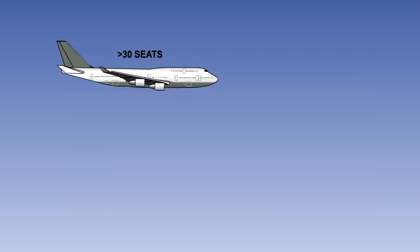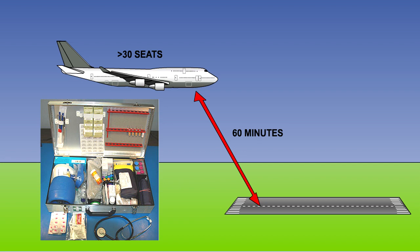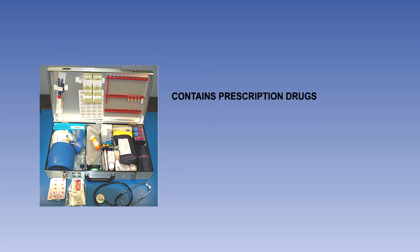If an aeroplane with a maximum approved seating capacity of more than 30 seats is operated more than 60 minutes flying time from an aerodrome at which qualified medical assistance can be expected to be available, it must be equipped with an emergency medical kit, commonly referred to as a doctor's kit. The regulations again list the items to be carried in this kit. There are many prescription type drugs on the list, as well as equipment for carrying out minor surgical procedures. The aircraft commander is responsible for ensuring that drugs from this kit are not administered, except by qualified doctors, nurses or similarly qualified personnel.